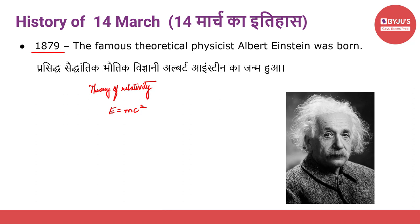Einstein was awarded the Nobel Prize in Physics for his services to theoretical physics, and especially for his discovery of the law of the photoelectric effect, which was a vital step in the development of quantum theory. The photoelectric effect is a phenomenon in which electrons are emitted from the surface of matter — usually metals — when light shines on it. Photoelectric प्रभाव एक ऐसी घटना है जिसमें इलेक्ट्रॉन पदार्थ की सतह से उत्सर्जित होता है जब प्रकाश उस पर चमकता है.